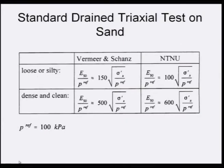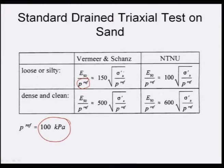From these results, G50 can be calculated as E50 divided by 2(1 + mu50), where mu50 is approximately one-third. Correlations from Vermeer and Sachan, and NTNU have been given: for loose silty sand and dense clean sand, E50 is expressed in terms of effective confining pressure sigma-x and reference pressure p-reference of 100 kPa, based on experimental results.